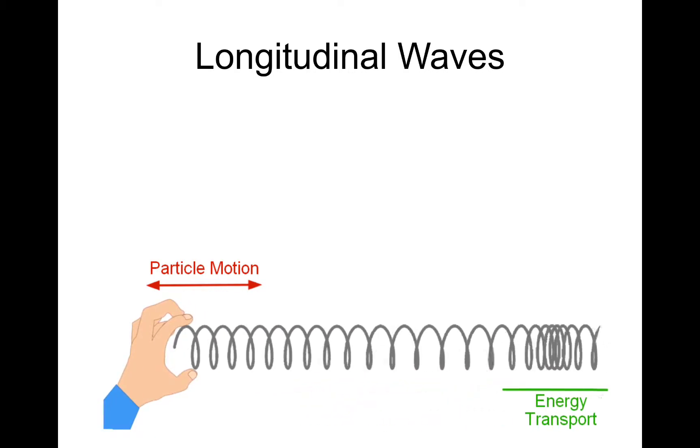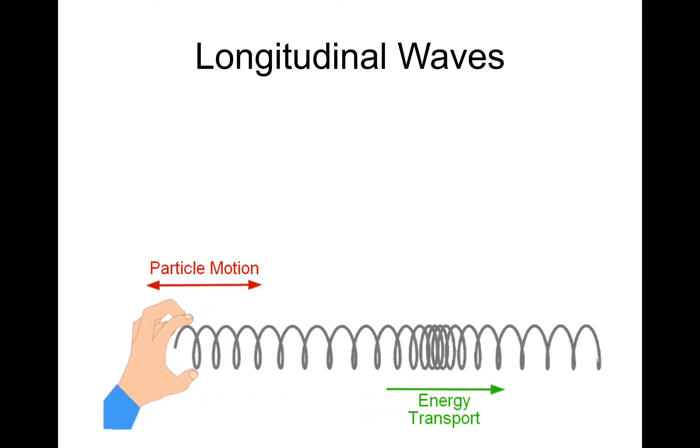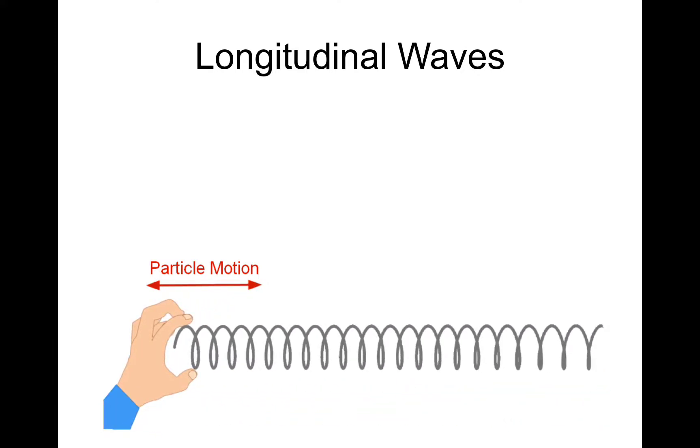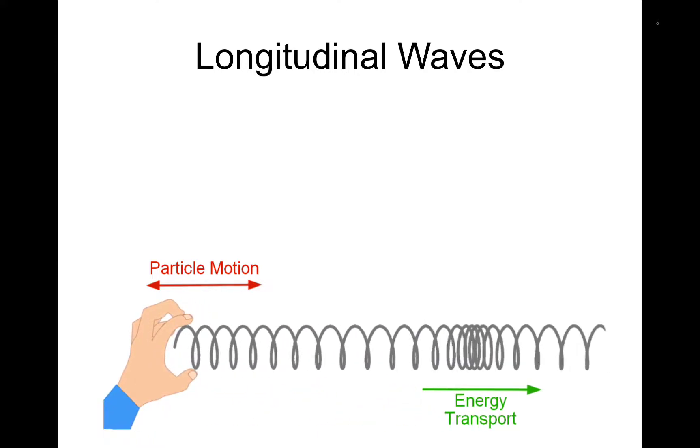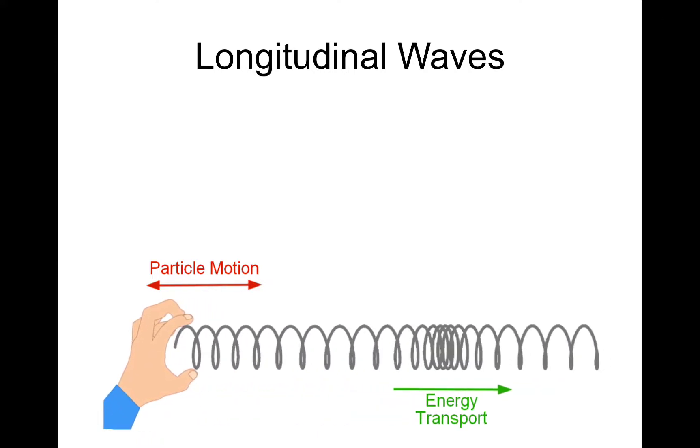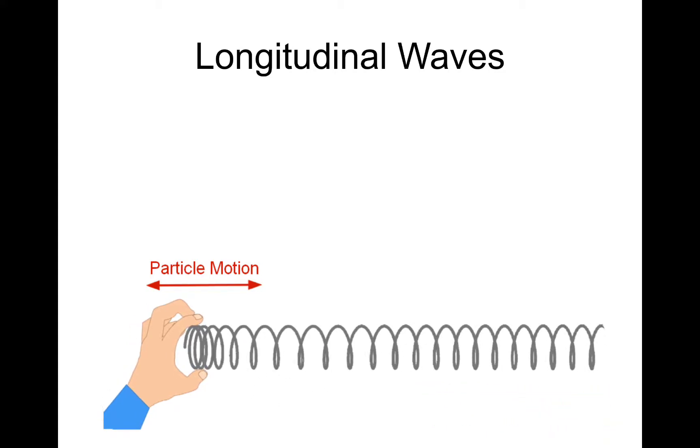So about a longitudinal wave. In a longitudinal wave, the particle motion and the energy propagation, or the energy transport, are in the same direction, or they are parallel to each other. So when the wave compresses, as it moves along, that region is called compression.